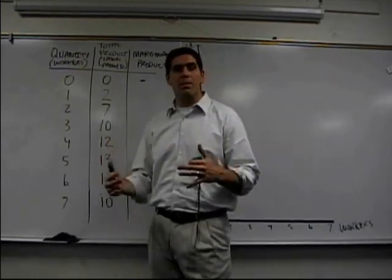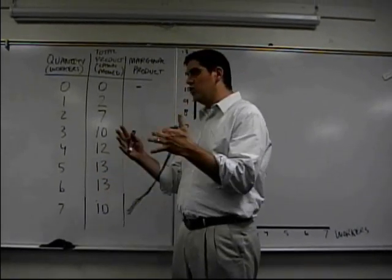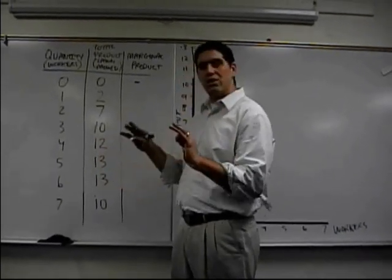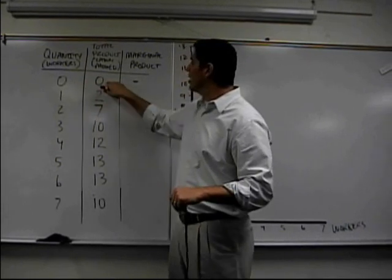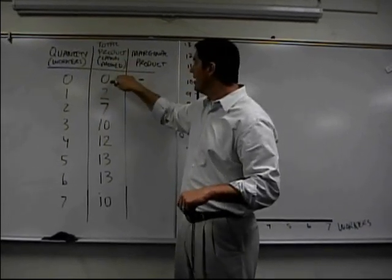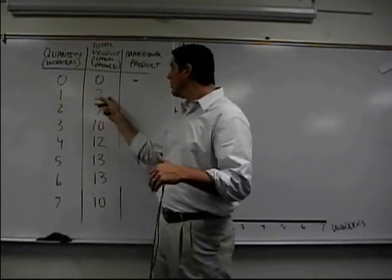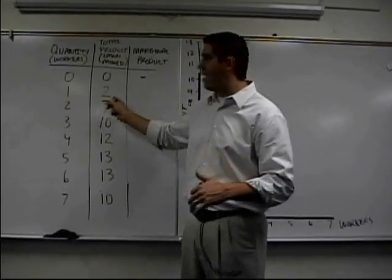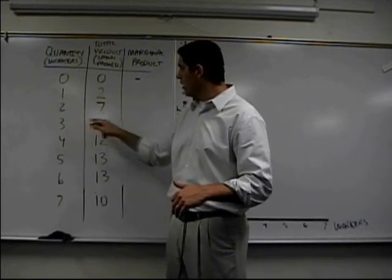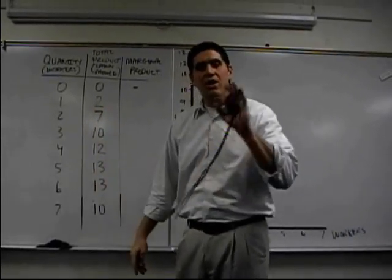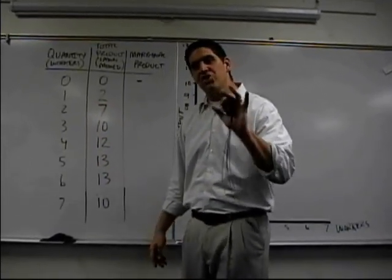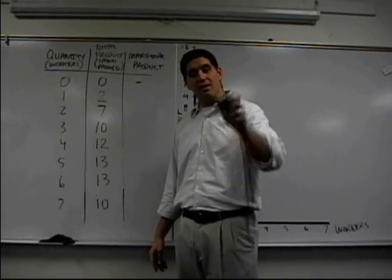You decide to start your own company mowing lawns, and you have two lawn mowers. That's all you've got. You hire no workers, you're going to get no output. This is total product. Now let's say this is the output for a Saturday. So one worker, which is you, you can mow two lawns on any given Saturday. Two workers can do seven, three workers ten, down the line. You're going to find out something called the Law of Diminishing Marginal Returns. You're going to find out about it in 60 seconds.